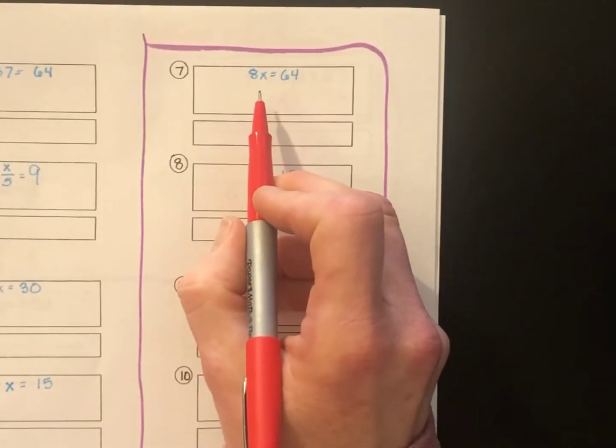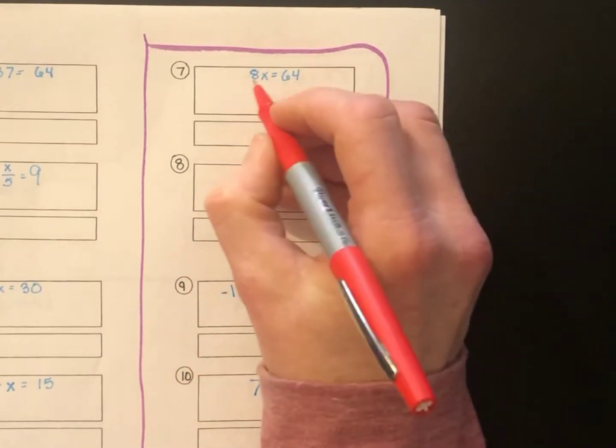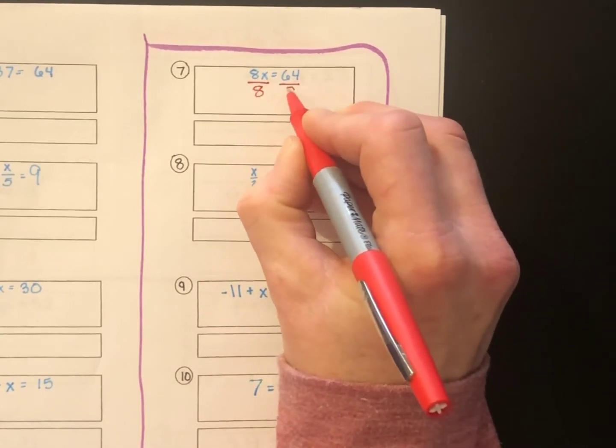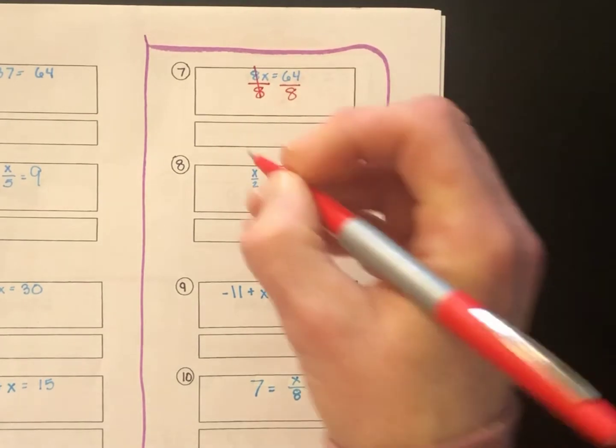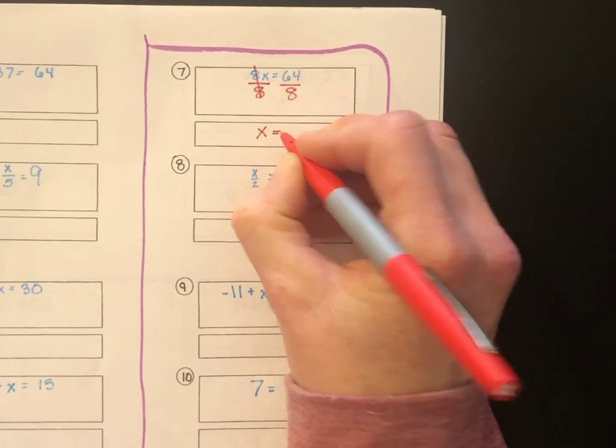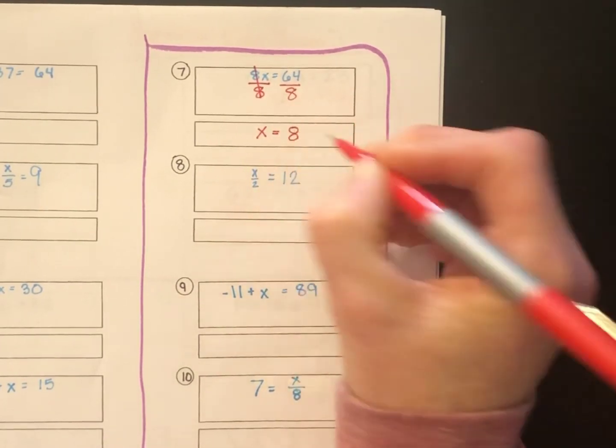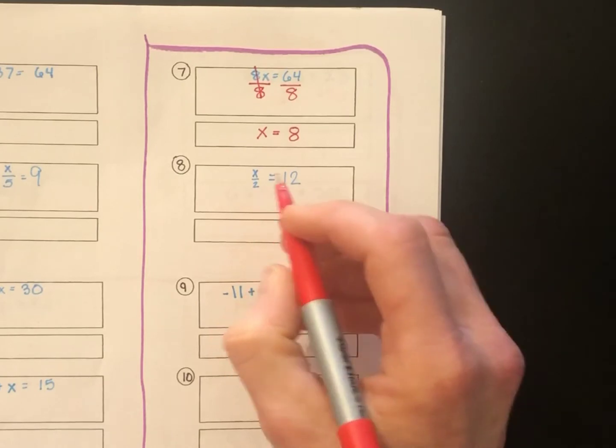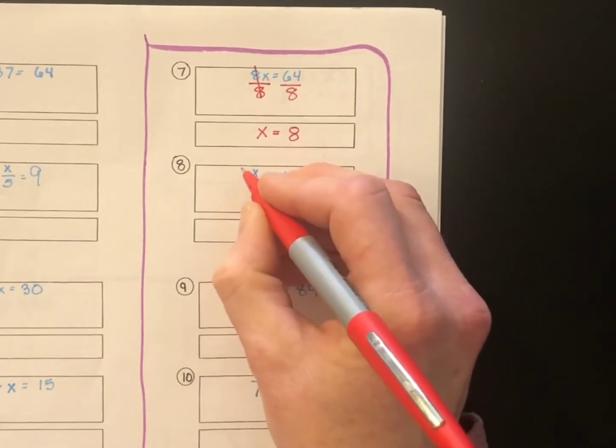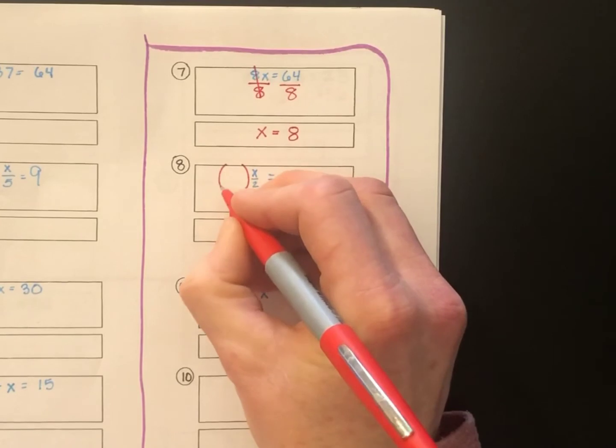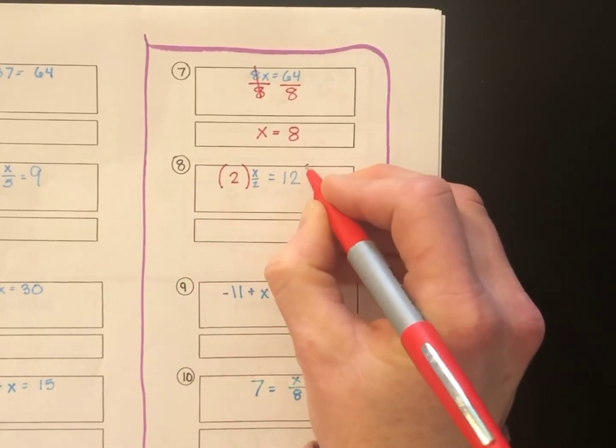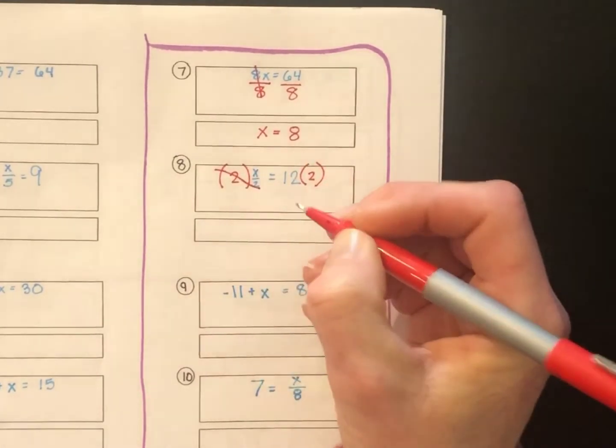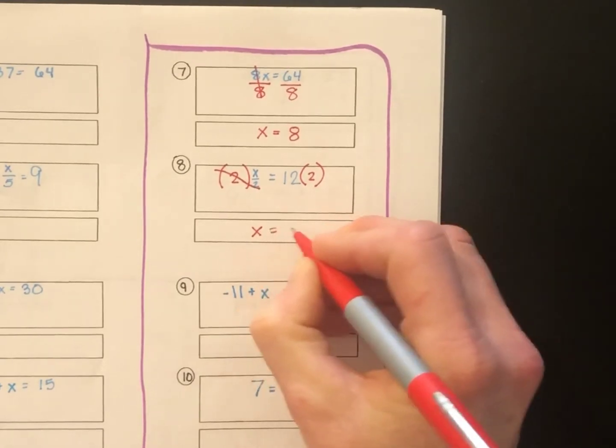Number 7, 8 times x is 64. The opposite of times 8 is divided by 8. I divide both sides by 8. 8x divided by 8 leaves me with just x equals 64 divided by 8 is 8. Number 8, x divided by 2 equals 12. The opposite of divided by 2 is times 2. I'll multiply both sides by 2. 2 times x divided by 2 leaves me with x. 12 times 2 is 24.